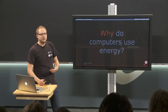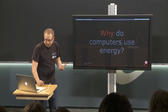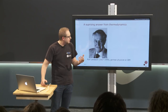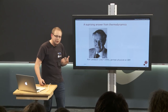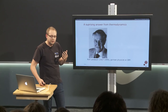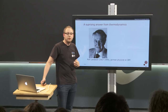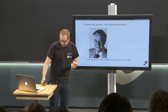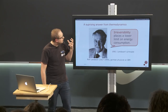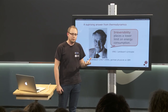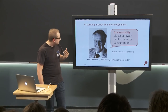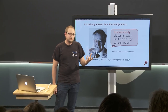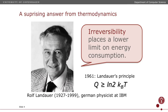In the 1940s, with the advent of electronic computers, physicists started to ask themselves this question — why did their house-sized computer use so much energy? But it wasn't until the early 60s, in 1961, that this fellow, Rolf Landauer, a German physicist with IBM, came up with a surprising answer. He found that it is irreversibility that places a lower limit on what we can do with respect to energy. This is codified in what's known as Landauer's principle, which says that for every irreversible operation you do, you have to dissipate a minimal amount of energy.